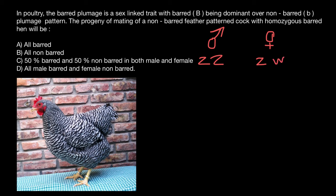Let's read our problem again. Barred is dominant over non-barred, and we have a non-barred feather pattern cock — so it's going to be this genotype — with a homozygous barred hen. Barred is dominant, so let's change the Z of the female to a different color; this blue color represents the dominant allele. So this is going to be the barred hen and the non-barred, double homozygous recessive male.